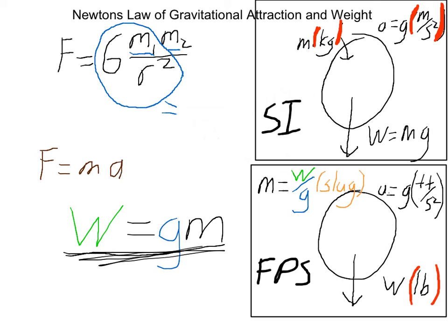In FPS, the English system, a little bit more confusing. We have acceleration, which is gravity, which equals feet per second squared. Our weight is in pounds. So our weight is a unit, and our mass is the derived unit. In SI, weight equals acceleration times mass. In FPS, mass equals the weight divided by the gravity. And that is called a slug.